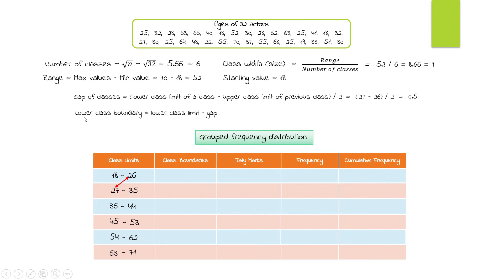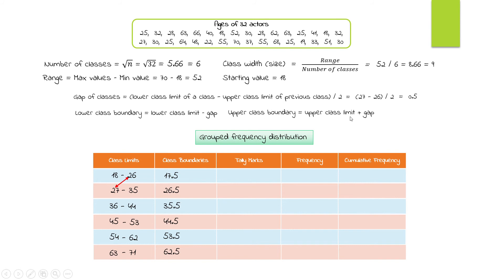Similarly, 27 minus 0.5 is 26.5, 36 minus 0.5 is 35.5, and so on — we subtract 0.5 from each lower class limit. For upper class boundaries, we add the gap of 0.5 to each upper class limit: 26 plus 0.5 is 26.5, then 35.5, 44.5, and so on. This ensures continuity between classes.